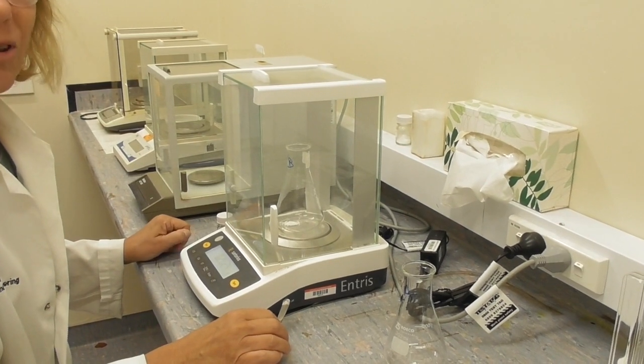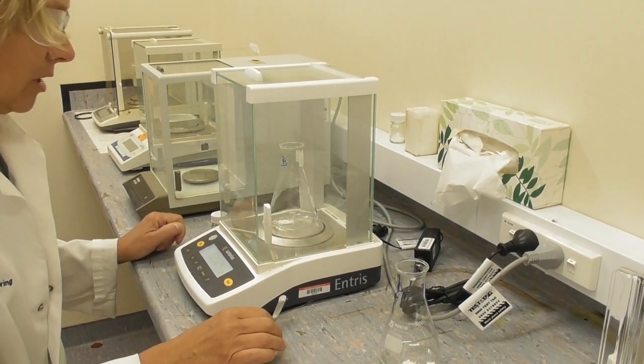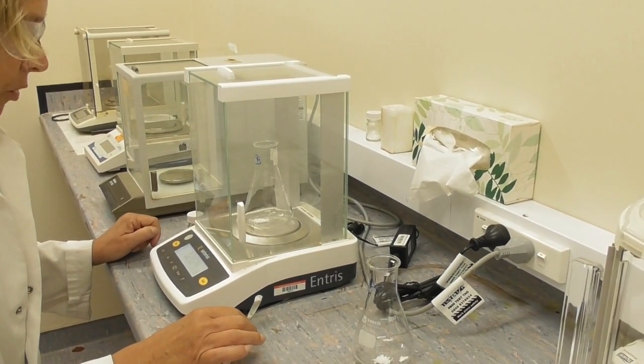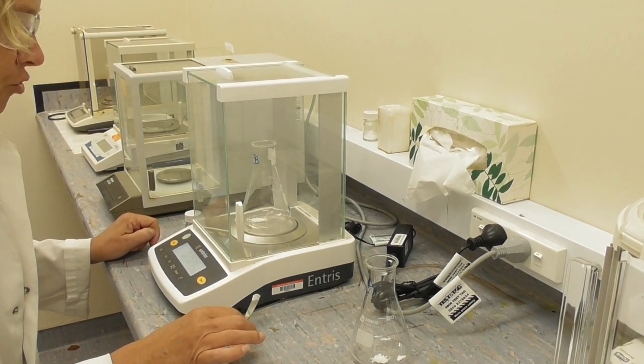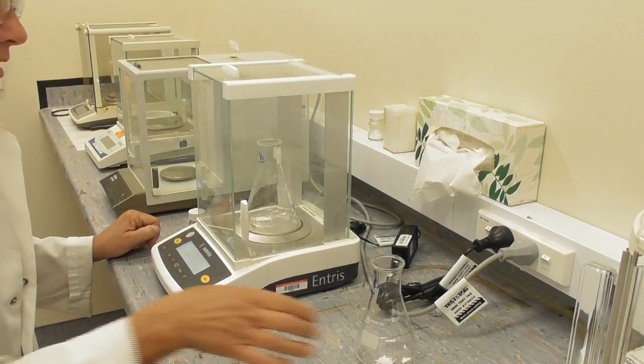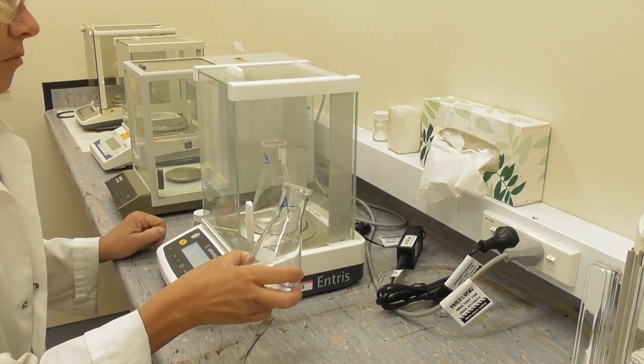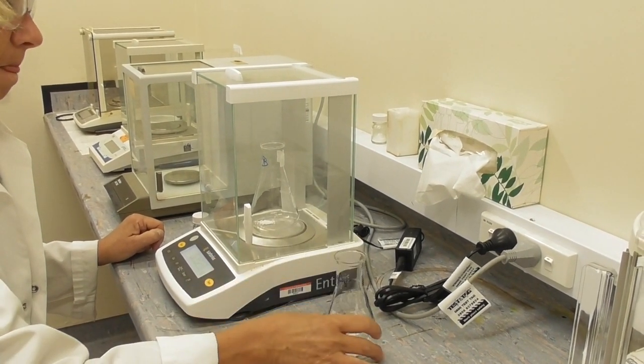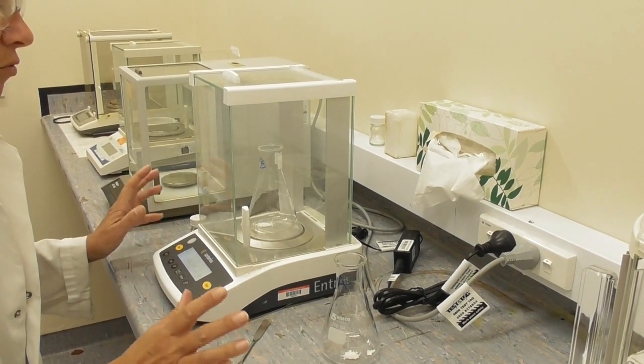As this titration needs to be done in duplicate, I prepare the second flask at the same time. The flasks are now labeled with A and B so I can tell them apart during the titration. The weight in the second flask is 0.2024.